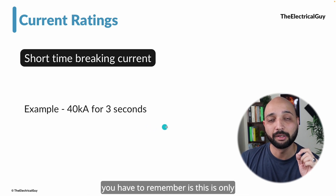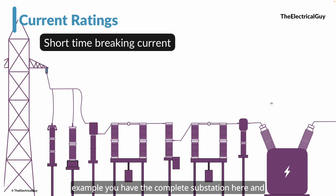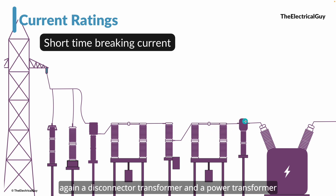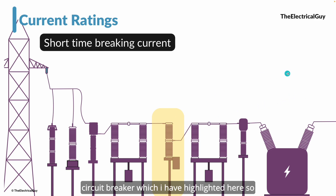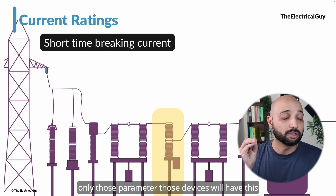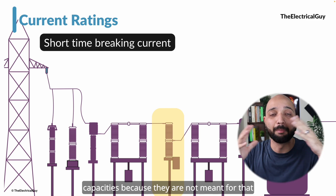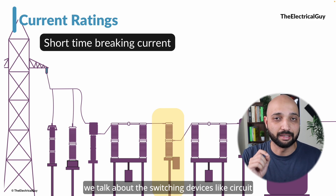This is only limited to switching devices and not all switchgear. In a complete substation you may have lightning arrestors, capacitor voltage transformers, current transformers, disconnectors, circuit breakers, and power transformers. Not all devices will have the short time breaking current capacity — only the circuit breaker. Devices like current transformers will not have short time breaking capacity because they are not meant for that. So the short time breaking current capacity is very important specifically for switching devices like circuit breakers.